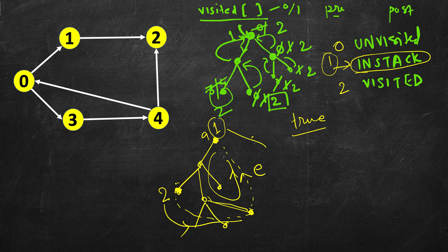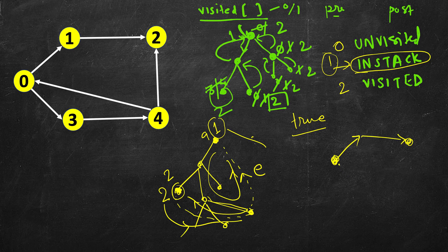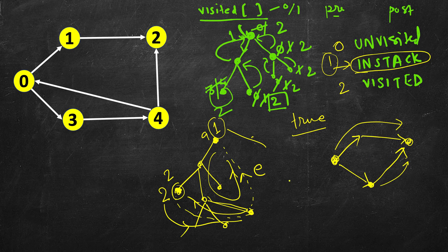If a node is in state 2, it means we had already looked at all possibilities from it. An edge to a state-2 node does not imply a cycle — it's like reaching a node via a parallel branch. There was no path back from that node to the current path, so it's not a cycle.